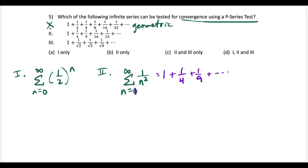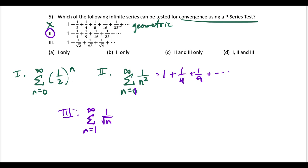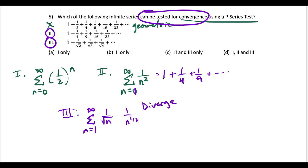The third series can be rewritten as the series from n=1 to infinity of 1 over √n, or 1 over n to the 1/2. This is a divergent p-series, but the question asks which series can be tested using the p-series test — not which one converges. So Roman numeral III can also be tested using the p-series test. Choice C is our answer.